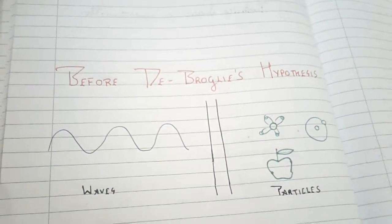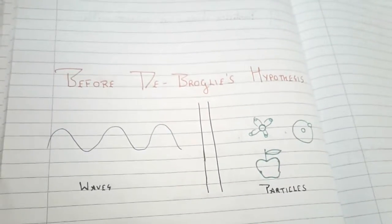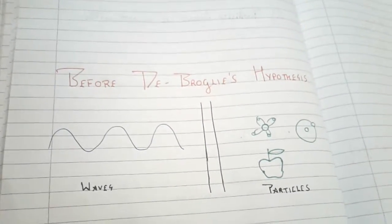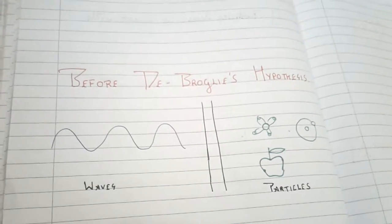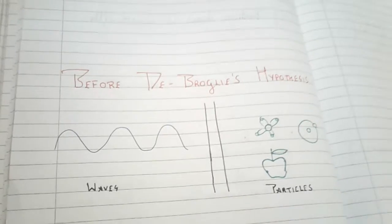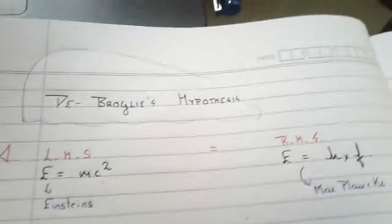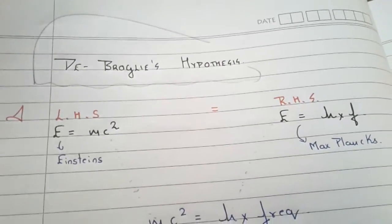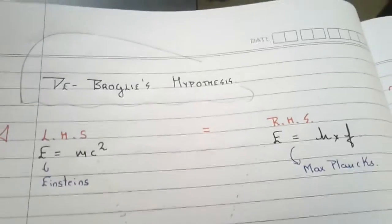You might have heard of theories that light acts like a particle as well as a wave. How can light or anything act as a particle as well as a wave? That is due to what de Broglie found out. He mathematically proved that particles can exhibit wave-like properties and waves can exhibit particle-like properties, by using two equations.